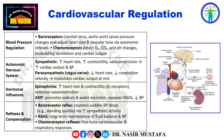Autonomic nervous system: sympathetic stimulation increases heart rate, contractility, and vasoconstriction, raising cardiac output and blood pressure. Parasympathetic stimulation, primarily via the vagus nerve, decreases heart rate and conduction velocity, modulating cardiac output during rest.